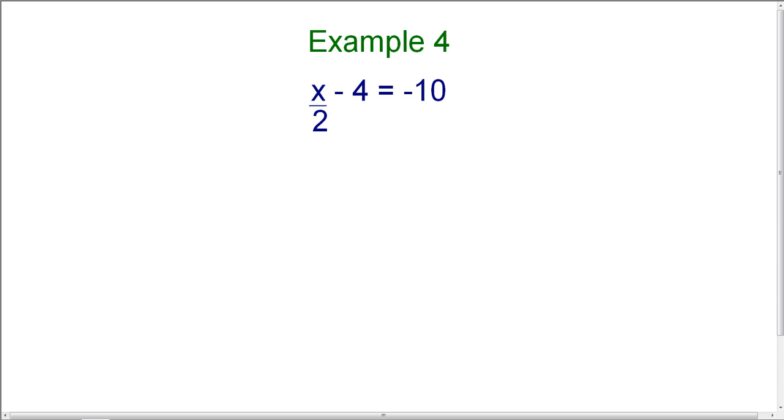Our goal is to get the variable, which is x, by itself on one side of the equation. Therefore, I need to get rid of the minus 4 and the 2, and this is going to require two different steps.